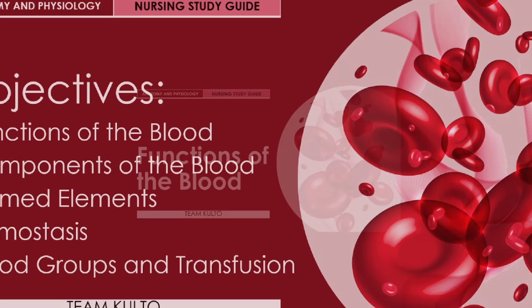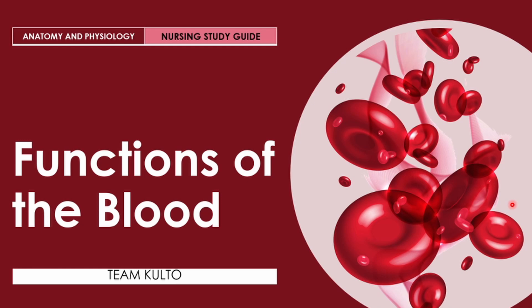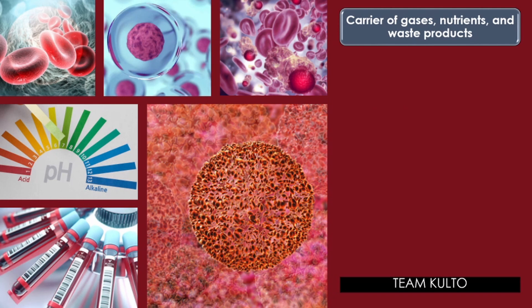Functions of the blood: blood is unique — it is the only fluid tissue in the body. Number one, blood is a carrier of gases, nutrients, and waste products. Oxygen enters the blood in the lungs and is transported to the cells. Carbon dioxide produced by cells is transported in the blood to the lungs from which it is expelled. Ingested nutrients, ions, and water are carried by the blood from the digestive tract to cells, and the waste products of the cells are moved to the kidneys for elimination.